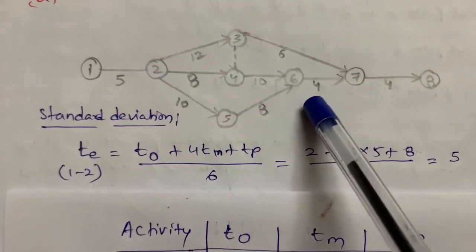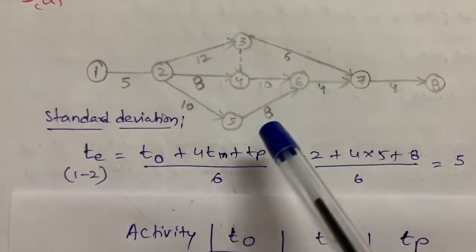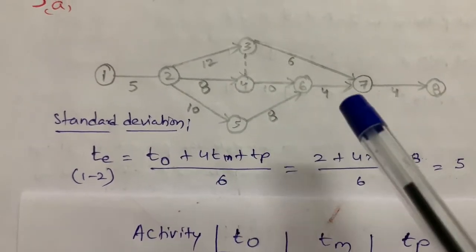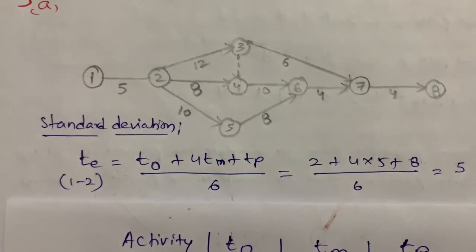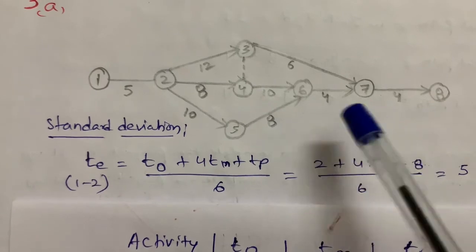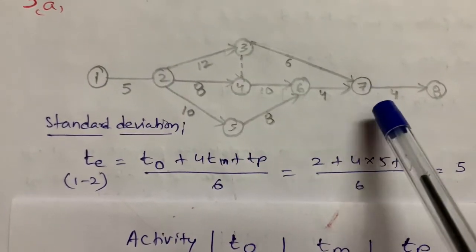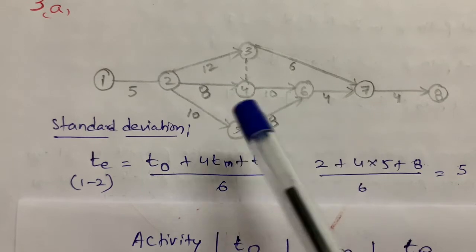5, 12, 6, 4, 4, 10, 8, 10, 8. After calculating all these, we need to calculate the critical path. Critical path is nothing but, after adding all the values, we will get the maximum value.